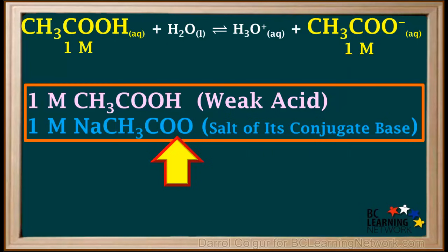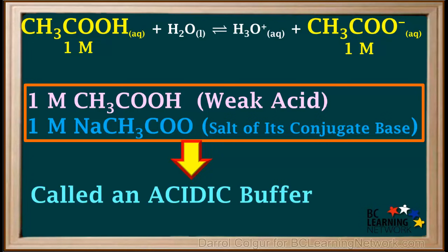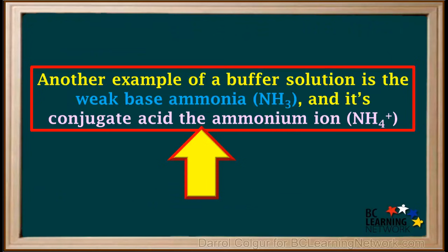This buffer is prepared using the weak acid CH3COOH and a salt of its conjugate base, NaCH3COO. Buffers prepared using a weak acid and a salt of its conjugate base are often called acidic buffers. This is true only for combinations that produce a pH below 7.